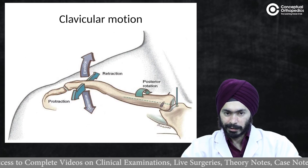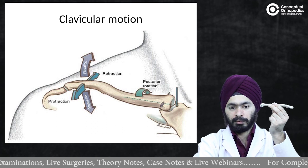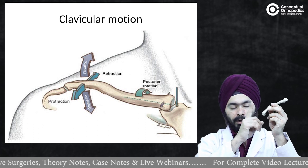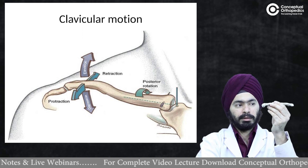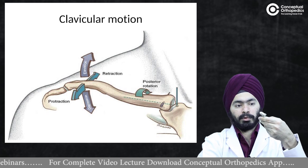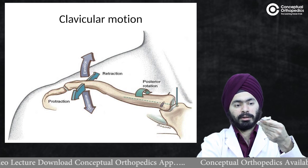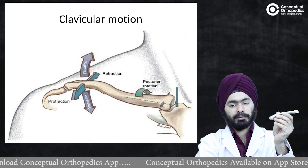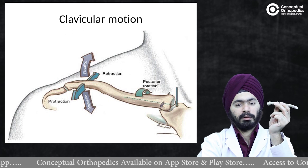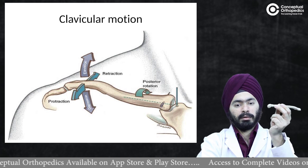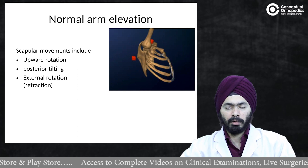Looking at the clavicle movements — this is my left clavicle, with the medial end and lateral end. The clavicle can perform elevation (lateral angle goes up) and depression, posterior rotation and anterior rotation, and protraction and retraction. So again, three pairs of movements for the left clavicle: elevation/depression, protraction/retraction, and posterior/anterior rotation.